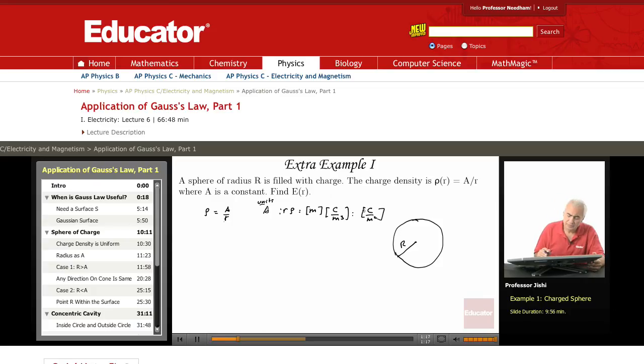Anyway, A is a constant. We want to find E everywhere. Let's take first R less than big R. We have two regions. There is a point that could be inside or outside the sphere. If it's inside the sphere, say here, this is R.